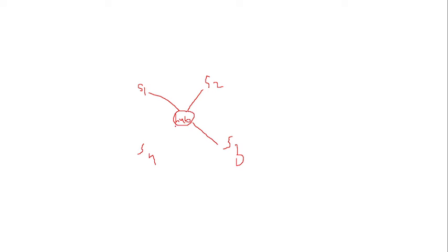In star topology, there is no direct communication between system 1 and system 2, as we had in point-to-point communication. If system 1 wants to communicate to system 2, first system 1 sends a request to the hub, then the hub sends a request to system 2. Once the acknowledgement has happened, system 1 and system 2 communicate via the hub.